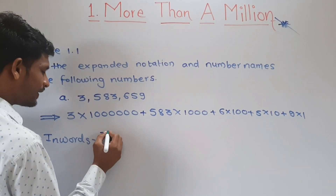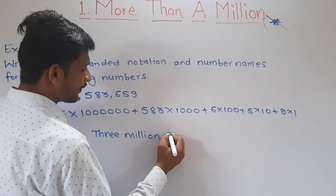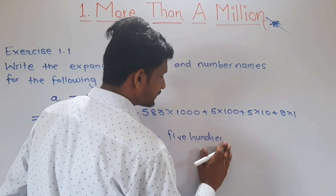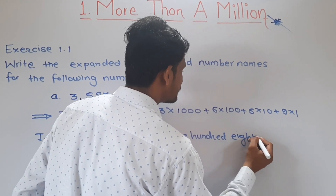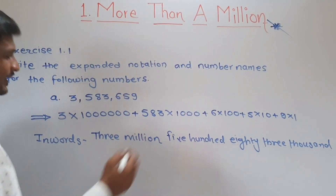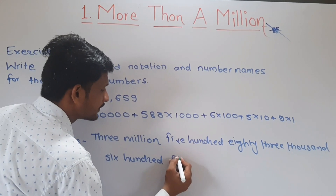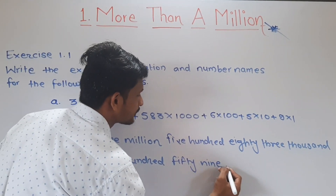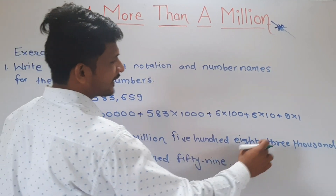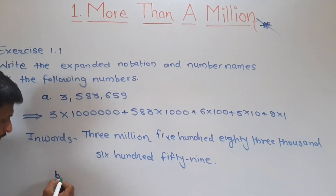In words, part A is: three million, five hundred eighty-three thousand, six hundred fifty-nine.